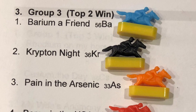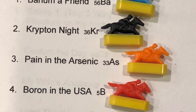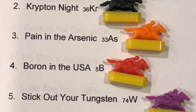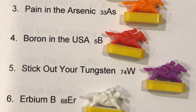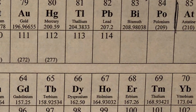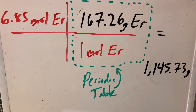Okay, the third race — only the top two will win this time. Barium a Friend in the first position, the blue horse. Kryptonite, the black horse in second position. Payne in the Arsenic, the third horse, the orange horse. Boron in the USA, the fourth position, the red horse. The fifth horse, Stick Out Your Tungsten, purple. And Airbnb, the white horse in the last position. Let's say we want to put our money on Airbnb — 6.85 moles. Airbnb on the periodic table is 167.26 grams per mole. To cancel moles, we put moles on the bottom and 167.26 grams on the top. 6.85 times 167.26 gives us 1,145.73 gram dollars if he comes in as a winner.